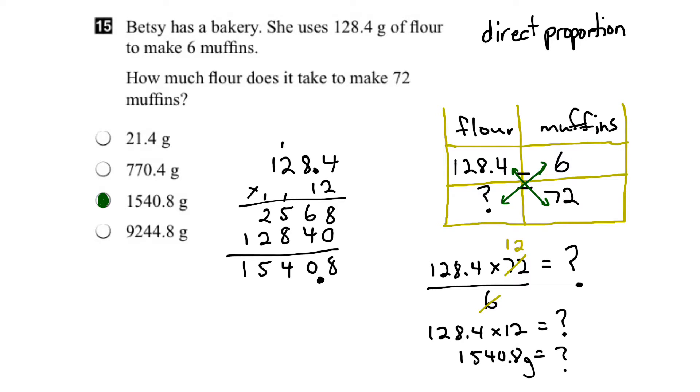Well, if you look at the number of muffins, I'm going from 6 to 72. How many times more am I trying to make here? Well, as we found out, I could divide 72 by 6 and realize that I'm actually creating 12 times the amount of muffins.